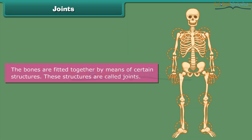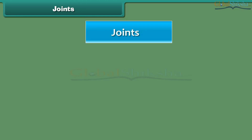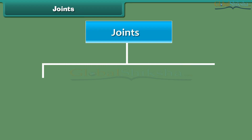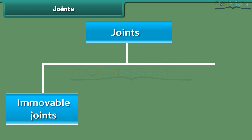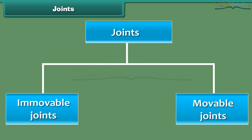The bones are fitted together by means of certain structures. These structures are called joints. Joints facilitate body movements. There are two main types of joints: immovable joints and moveable joints.